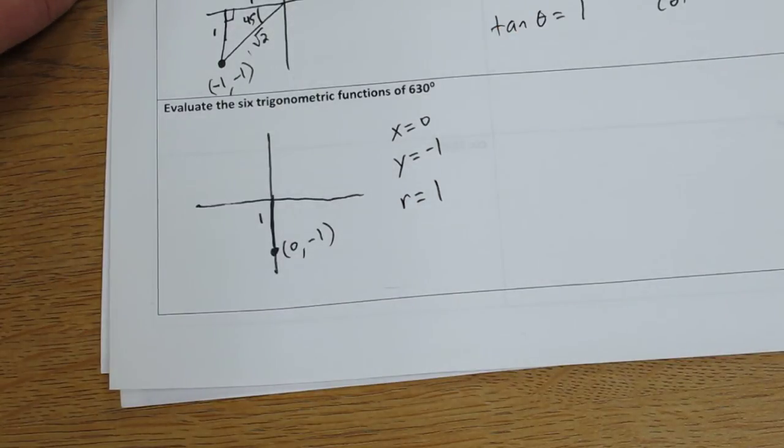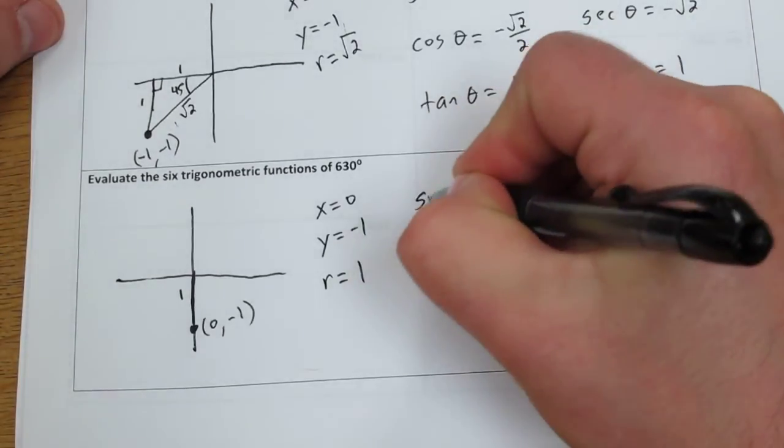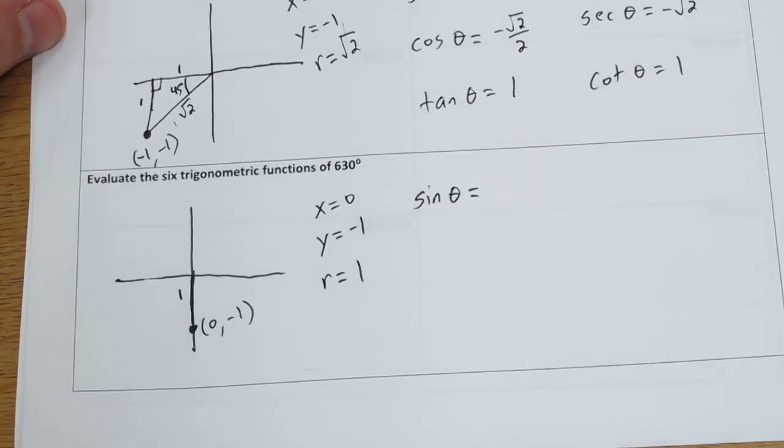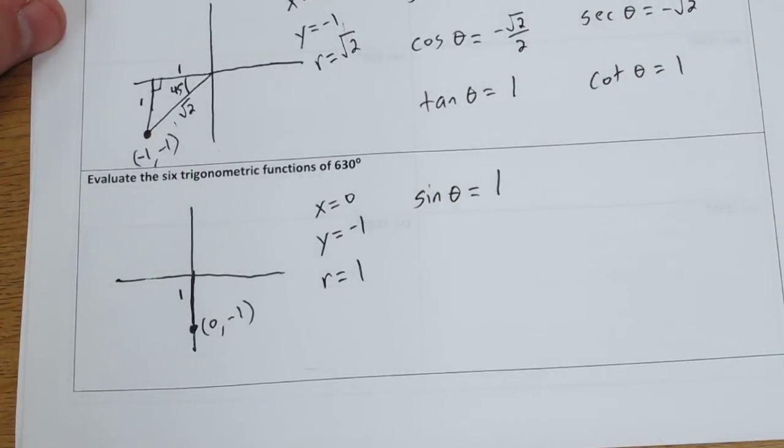Now you can use your formulas up here again. Sine theta is y over r, so negative 1 over 1. So it's 1.